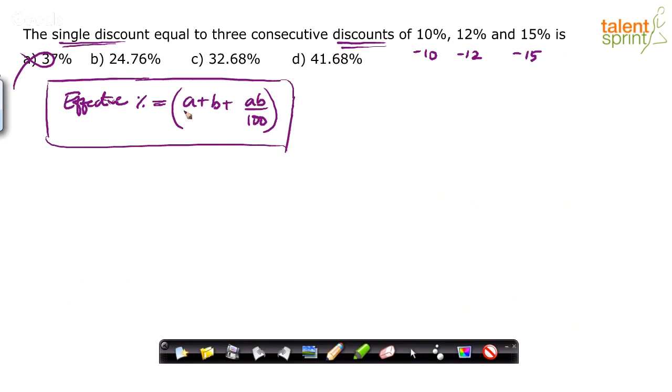So a plus b plus ab by 100, where a is minus 10 and b is minus 12, right? First, we will apply effective on these two. We will get the result. With the result and the 15, again, we will apply effective percentage. Why are we taking negative signs? Because discount is a reduction. So find out the first one. Effective of, let's say, effective of 10 and 12.